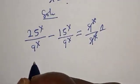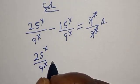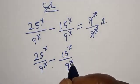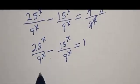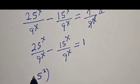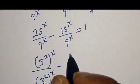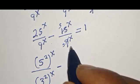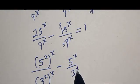And we have 25 to the power of s over 9 to the power of s, minus 15 to the power of s over 9 to the power of s, is equal to 1. We can reduce this: 25 to the power of s, rewriting as 5 squared to the power of s, over 9 to the power of s, rewriting as 3 squared to the power of s, minus 15 to the power of s, is equal to 1.